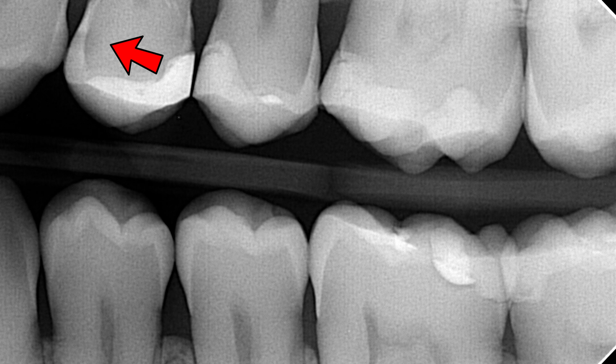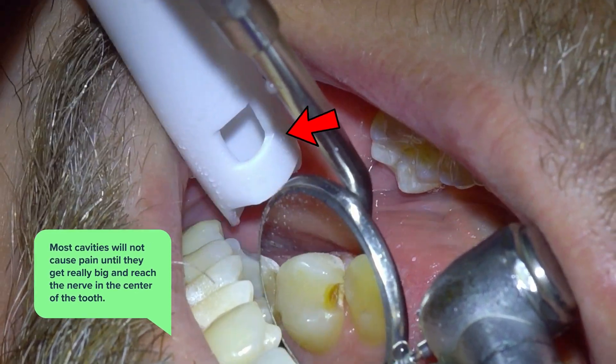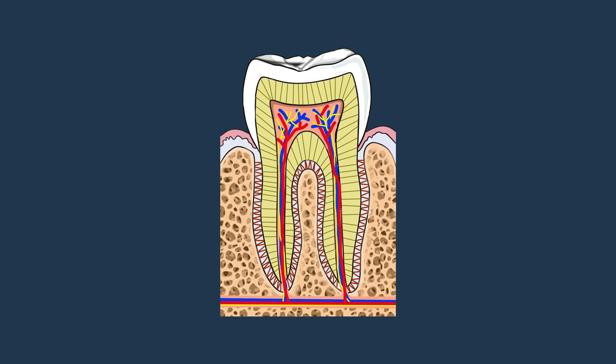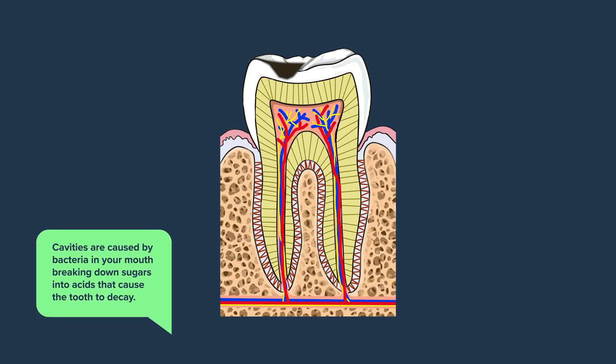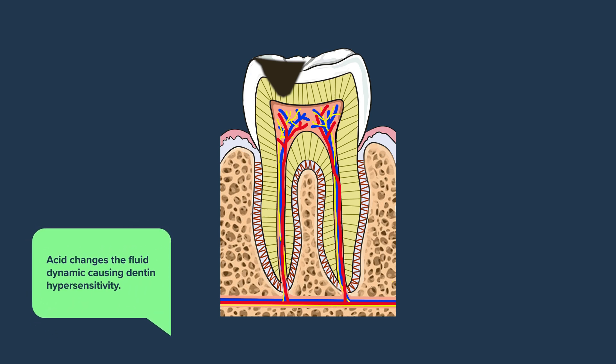The first cause of dentin hypersensitivity is cavities or tooth decay. Most cavities will not cause pain until they get really big and reach the nerve in the center of the tooth — and that is not dentin hypersensitivity, that's something else. But they will cause a little dentin hypersensitivity before the cavity even gets big. Cavities are caused by bacteria in your mouth breaking down sugars into acids that cause the tooth to decay. Once the decay has reached past the enamel layer, the bacteria are still creating acids, but now they interact with the dentin tubules below that enamel layer, changing the fluid dynamic and causing dentin hypersensitivity.